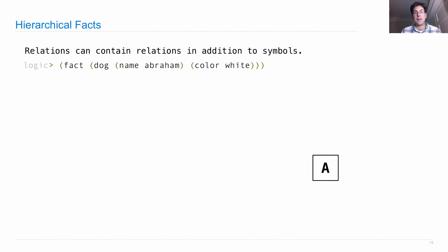I can say fact: the following two things are in a dog relation. The name is Abraham and the color is white. Now what have I done here?